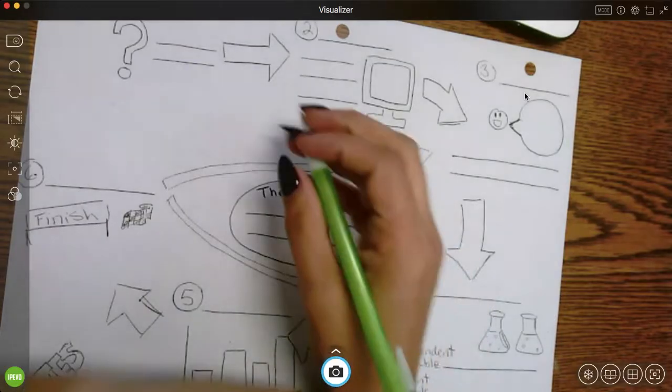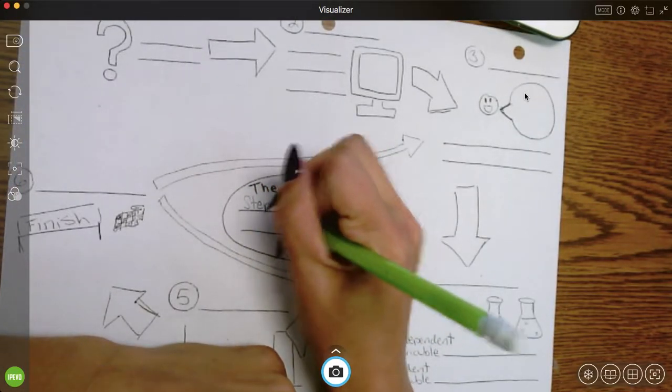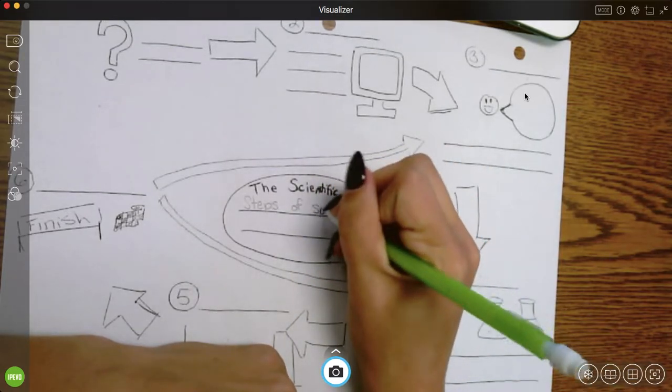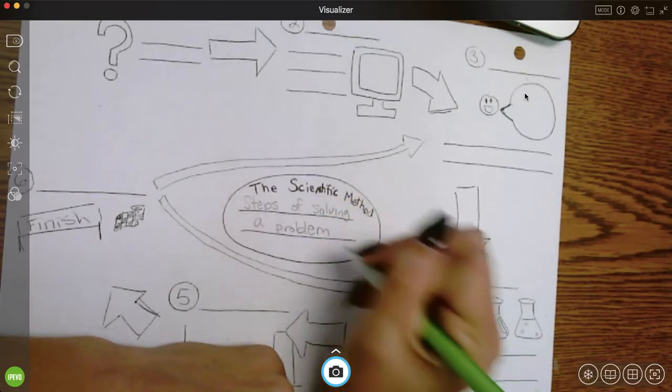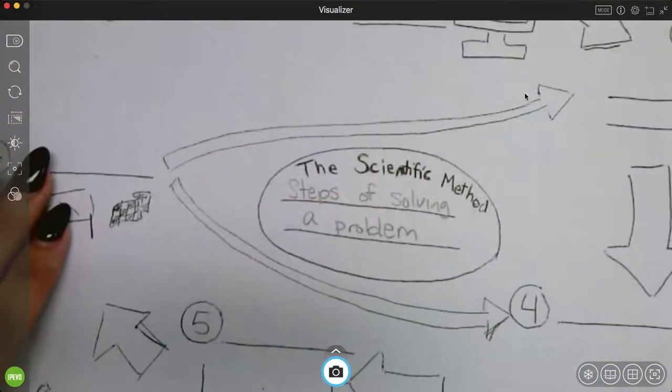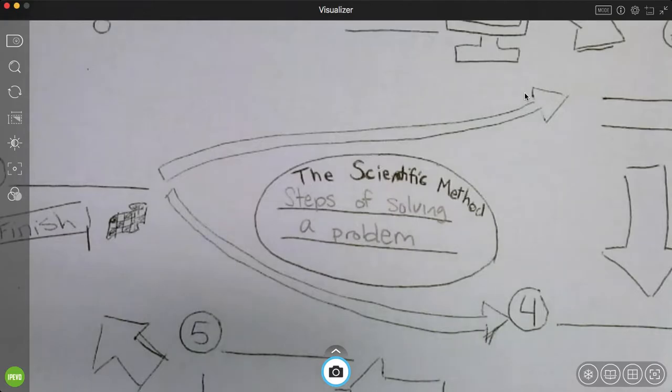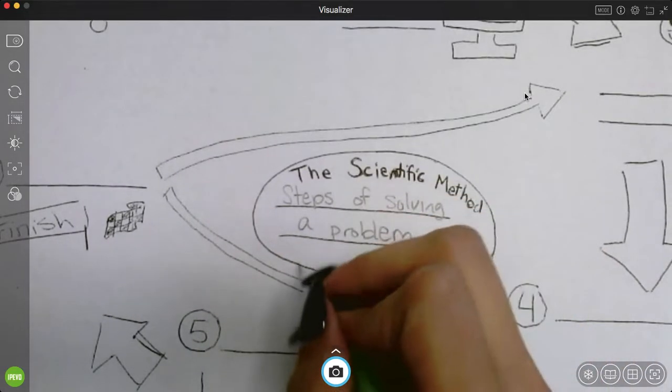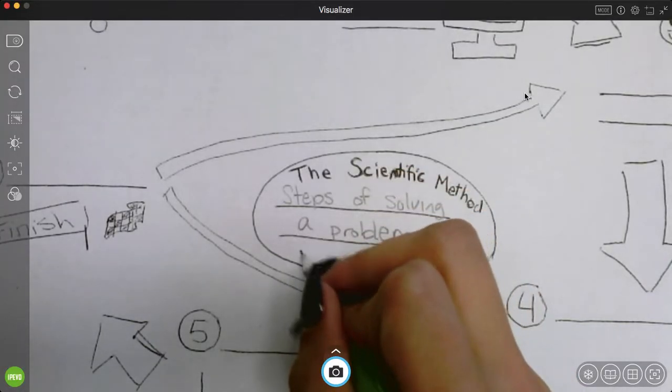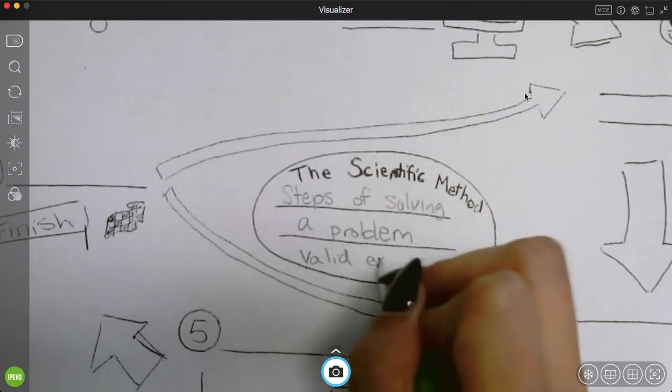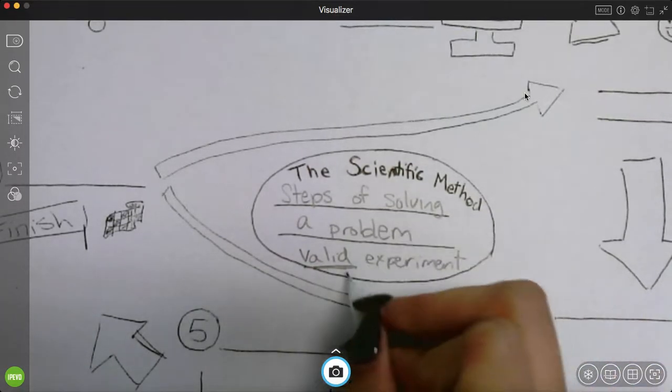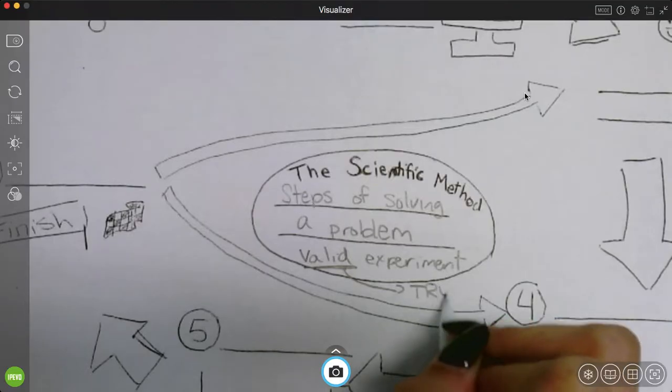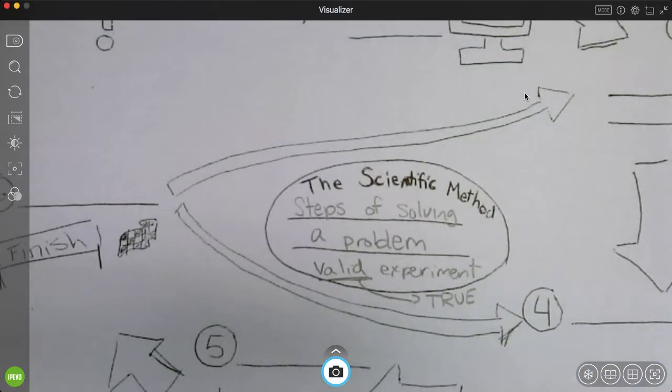So let's first define what it is. The scientific method, again, are steps we're going to use in order to solve some type of problem. When we use the scientific method, we are going to end up with what we call a valid experiment. And valid is just a fancy word that means true or it reflects reality. So it's going to show us what the real world is actually like.